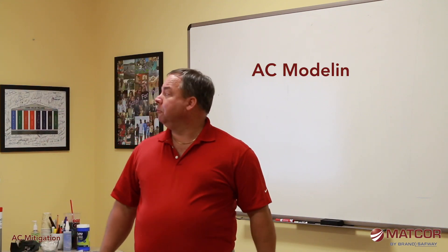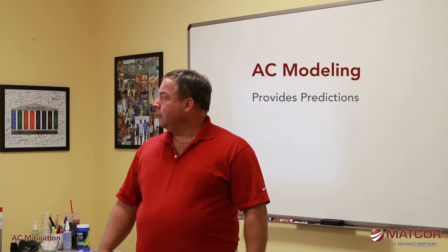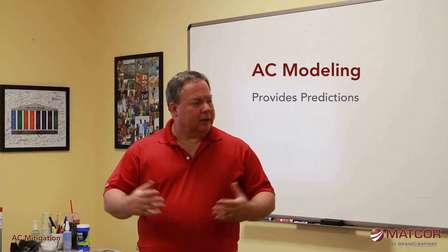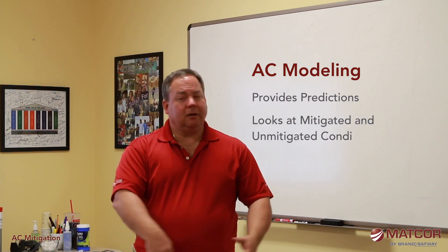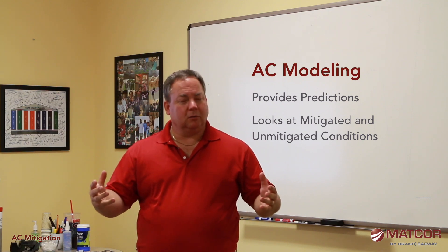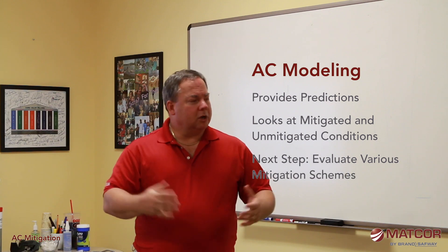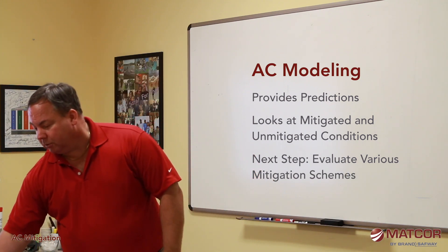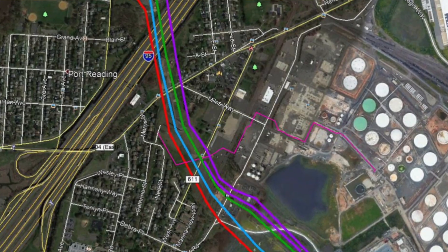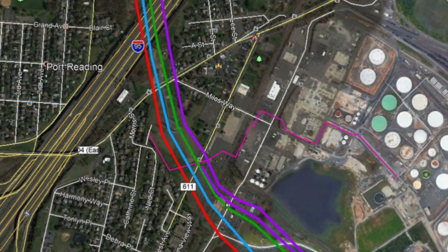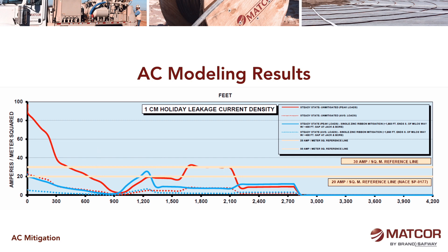We use AC modeling to provide predictions and look at what the mitigated and unmitigated conditions are. We build a model — or alternatively go in ad hoc — and come up with some scheme to mitigate. Going back to this pipeline application we looked at earlier when discussing modeling: the modeling results showed a couple of areas where the red line falls above the 20 amps per square meter lower yellow level, so there are a couple of spots we're concerned about.